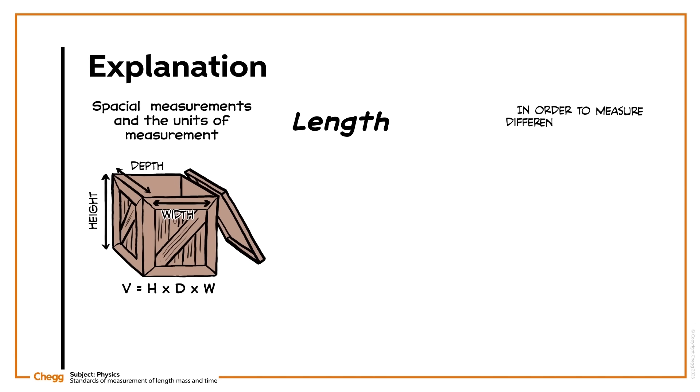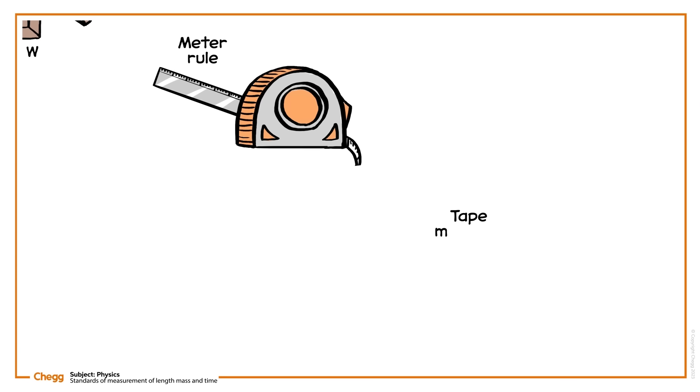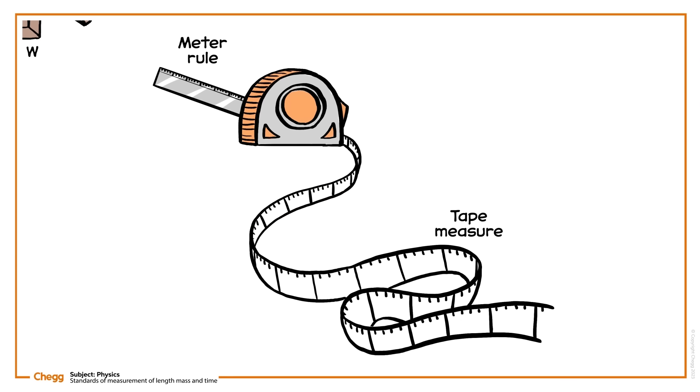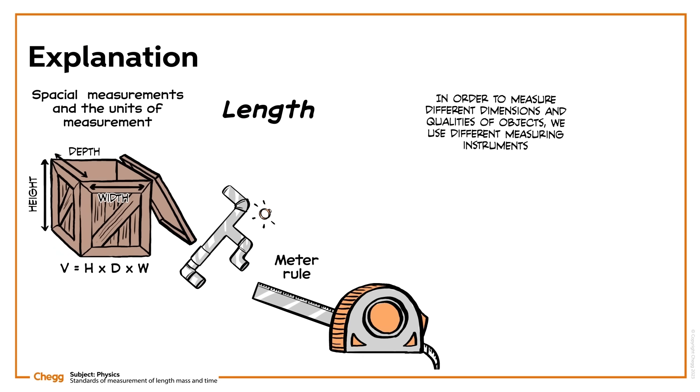In order to measure different dimensions and qualities of objects, we use different measuring instruments. A meter rule, for example, is a standardized stick with all the subdivisions of a meter, and a tape measurer is a convenient way to measure lengths longer than one meter. For smaller, more awkward lengths, or those that need more precision, like the inside diameter of a wedding ring or gas pipe, you can use a vernier caliper.